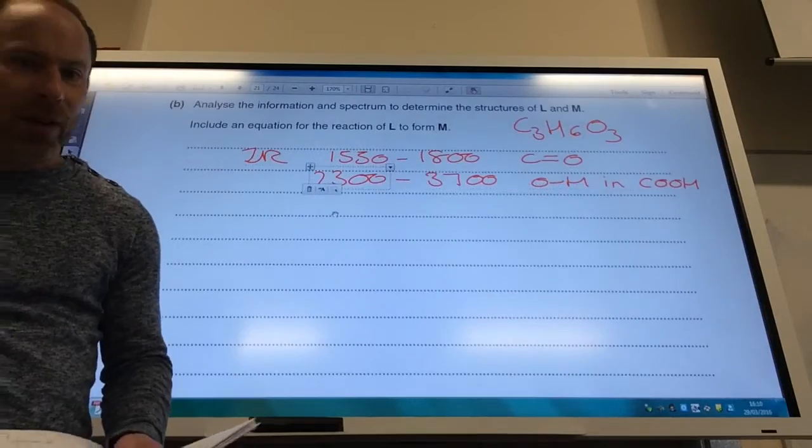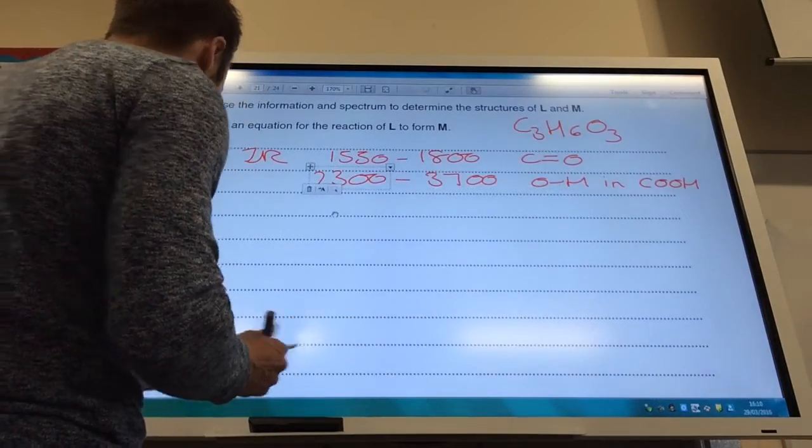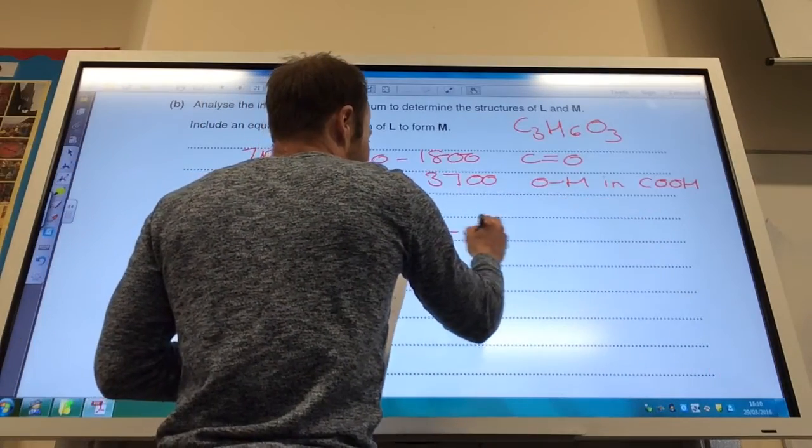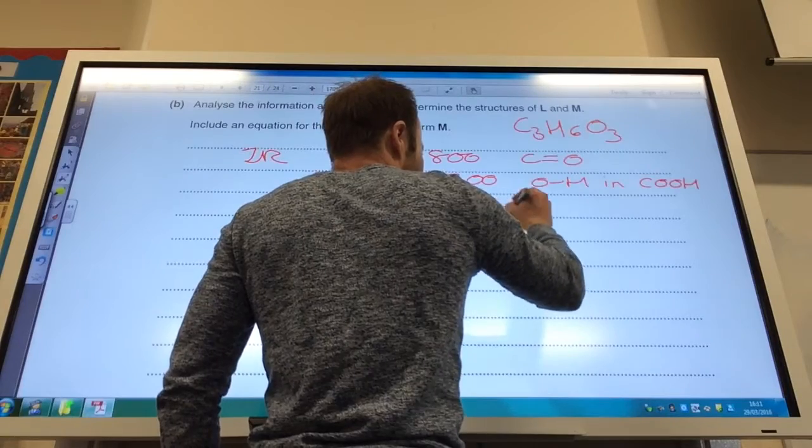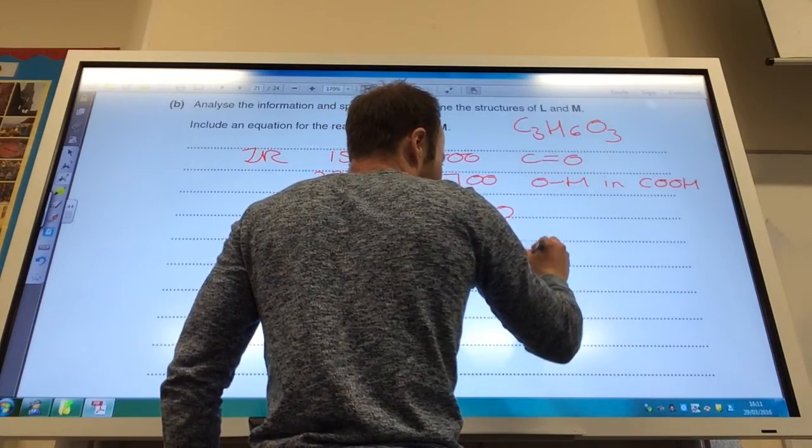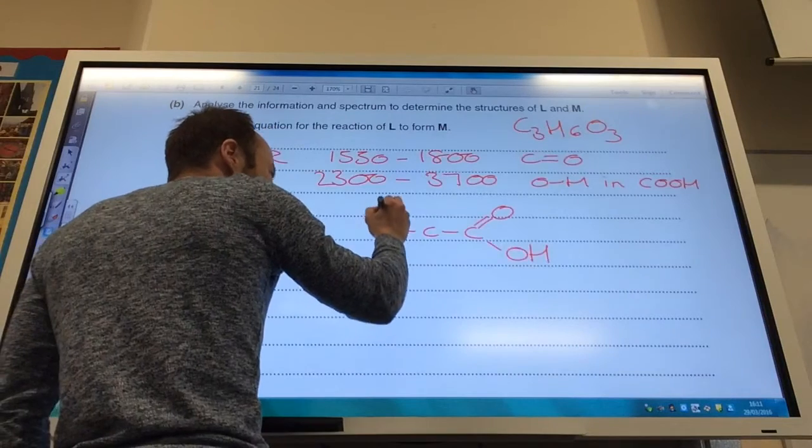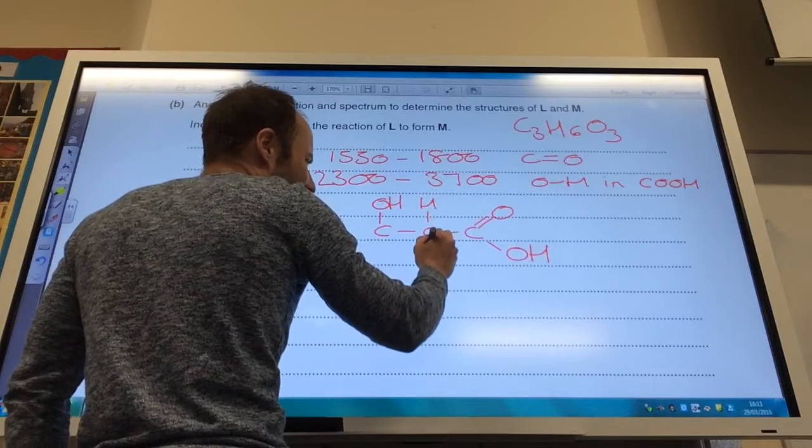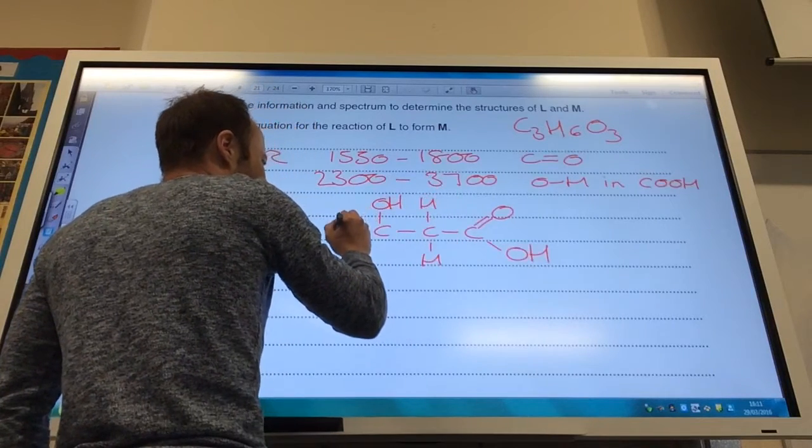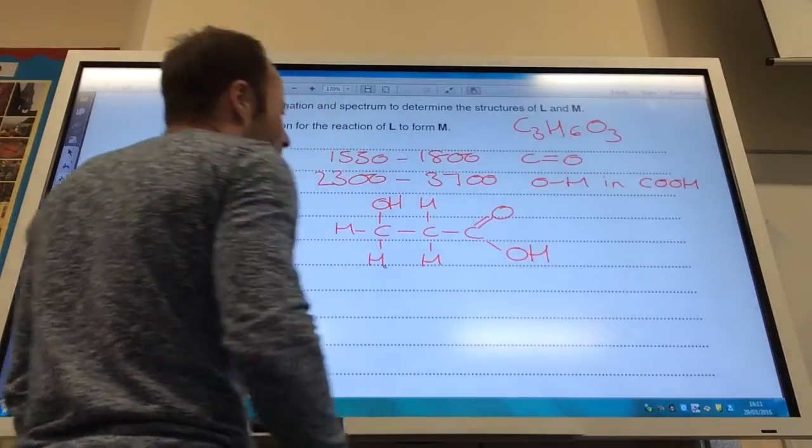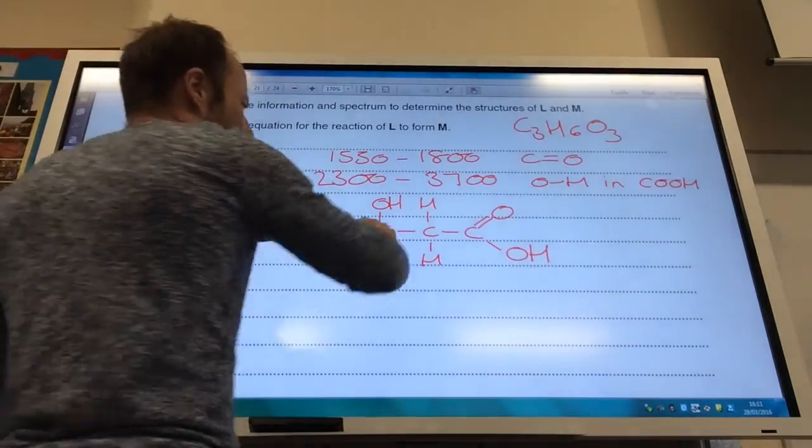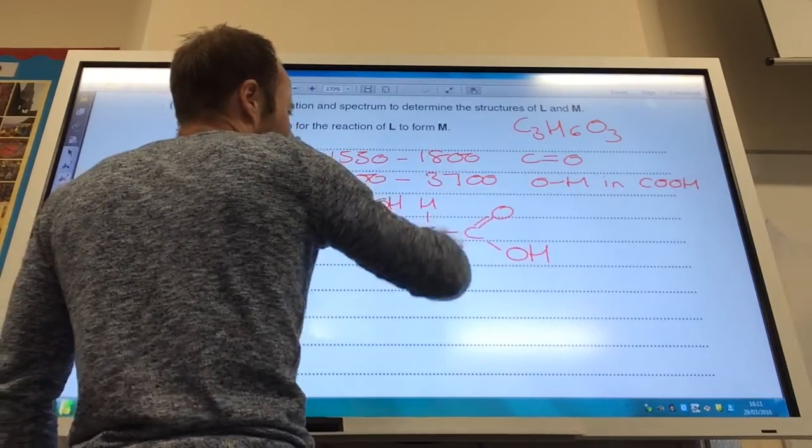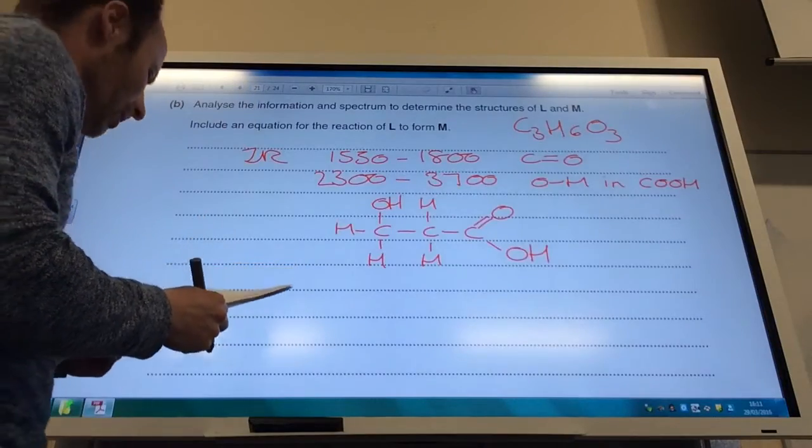What am I left with? Well, I know I've got three carbons, so let's put my three carbons in. It's got one carboxylic acid group. The OH group, the other OH group must be on an end carbon, because it can be oxidized to give me a carboxylic acid. So I think that would be L, C3O3H, 1, 2, 3, 4, 5, 6. So that's looking good to me.